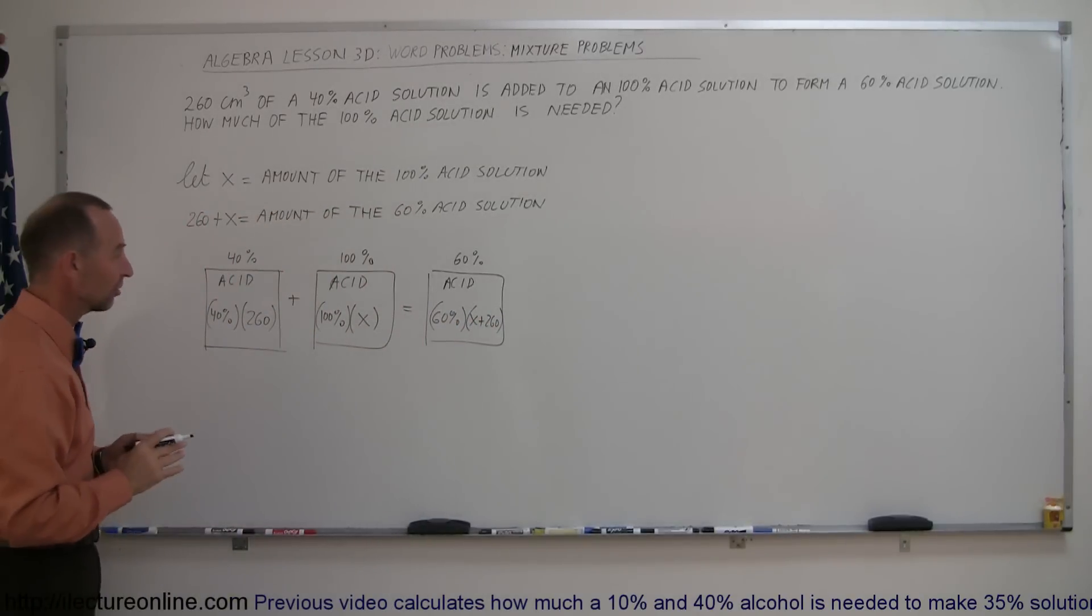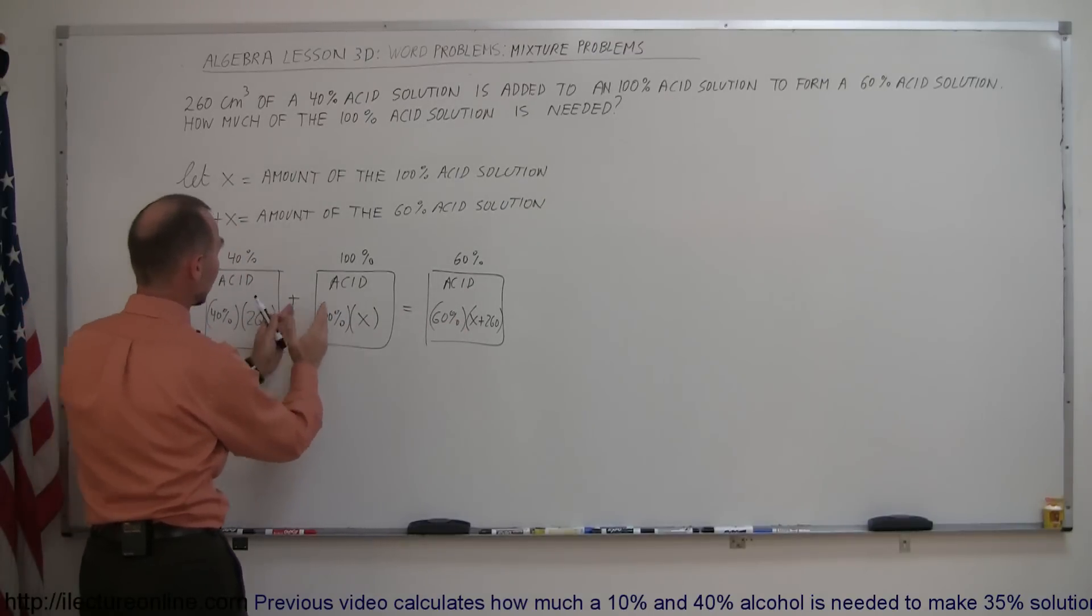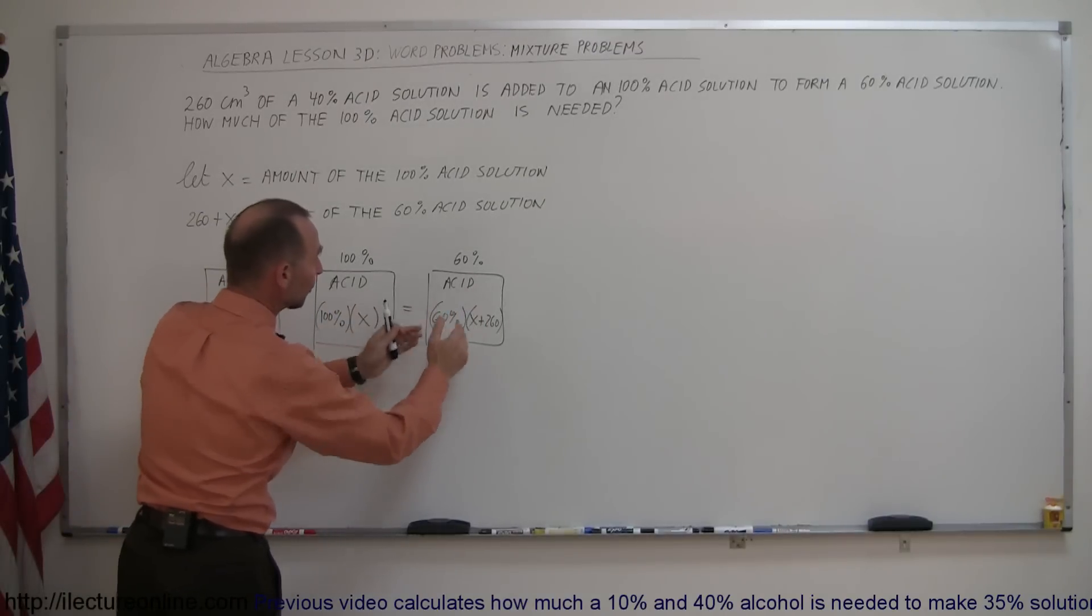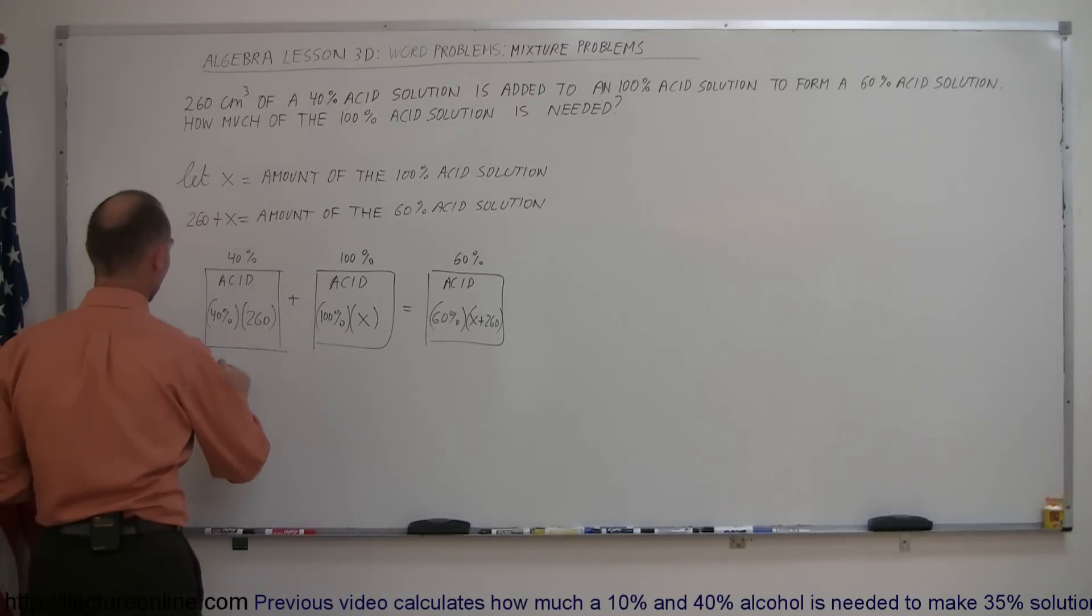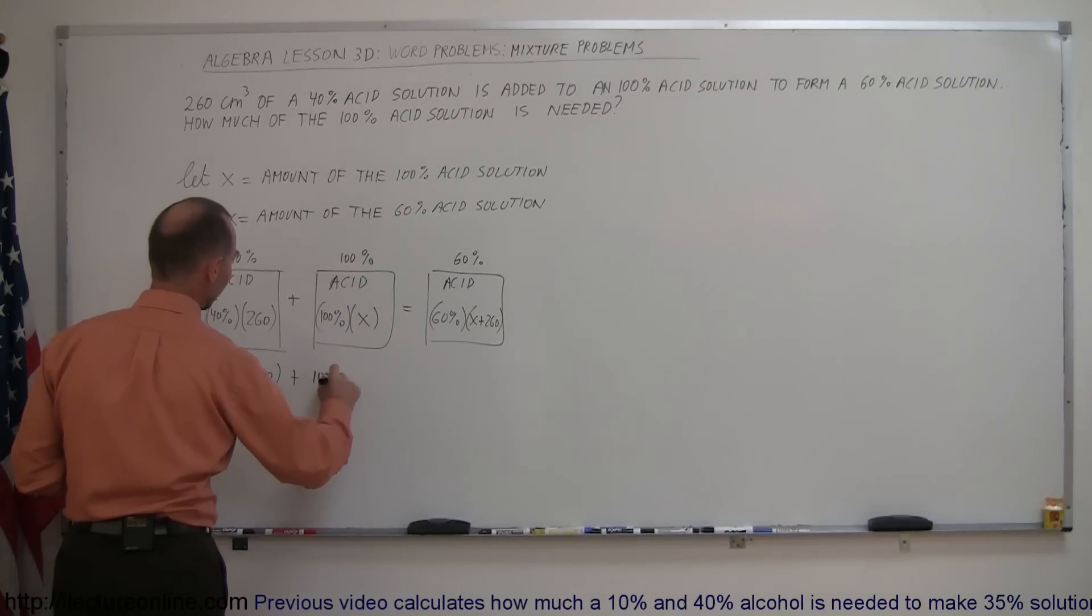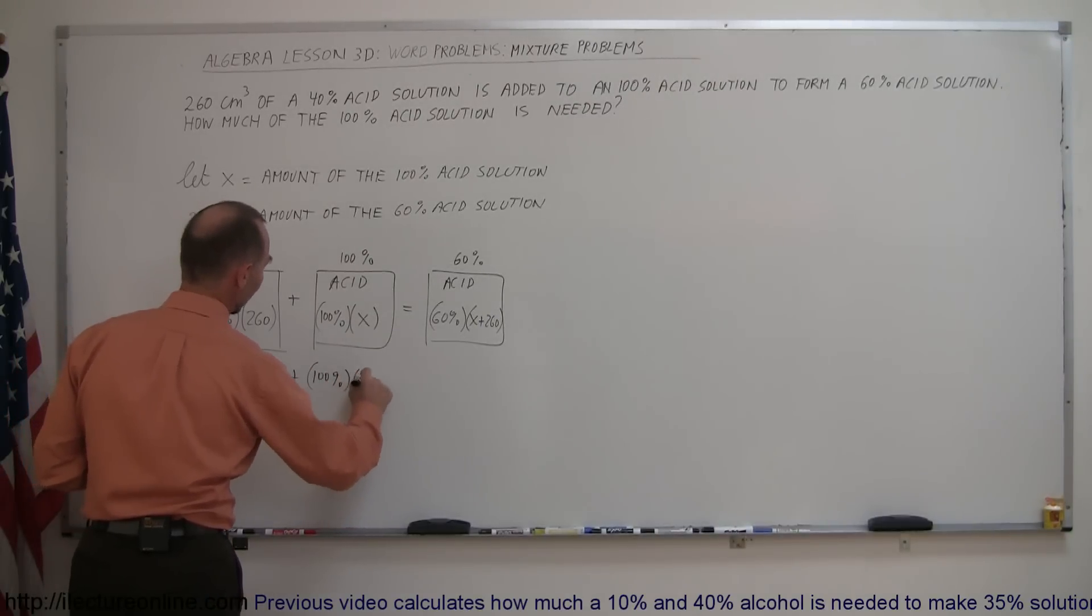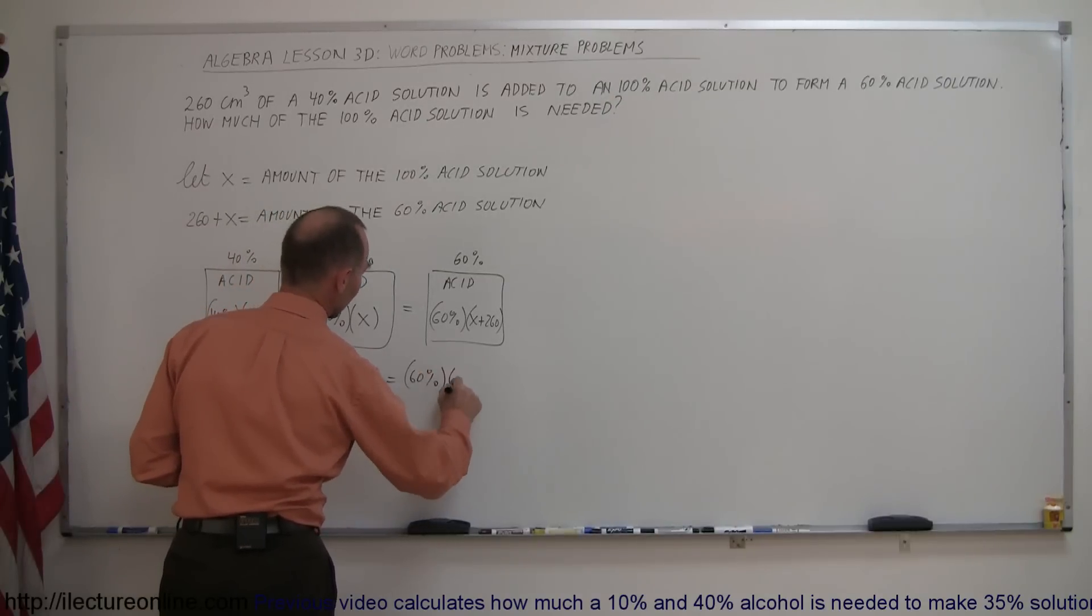So that's how you keep track of the acid, and this plus this must add up to that. So the amount of acid here plus the amount of acid here must add up to the total amount of acid. So now we have an equation. We have 40% times 260 plus 100% times X equals 60% times X plus 260.